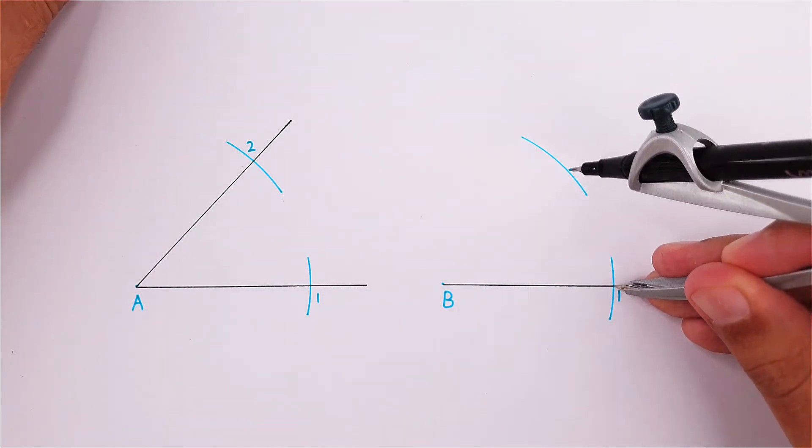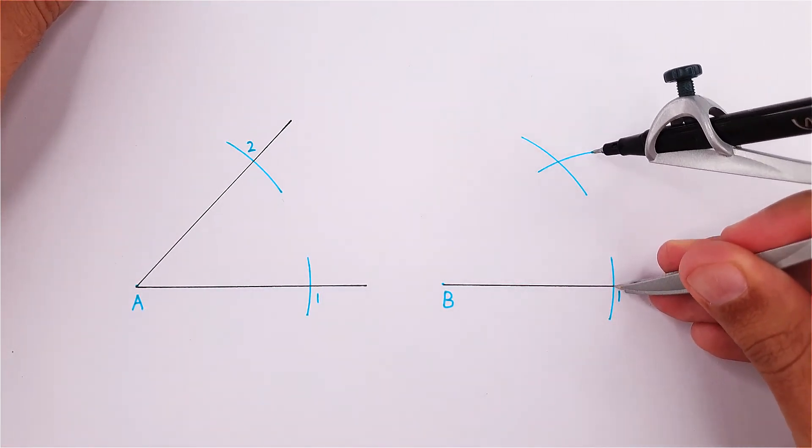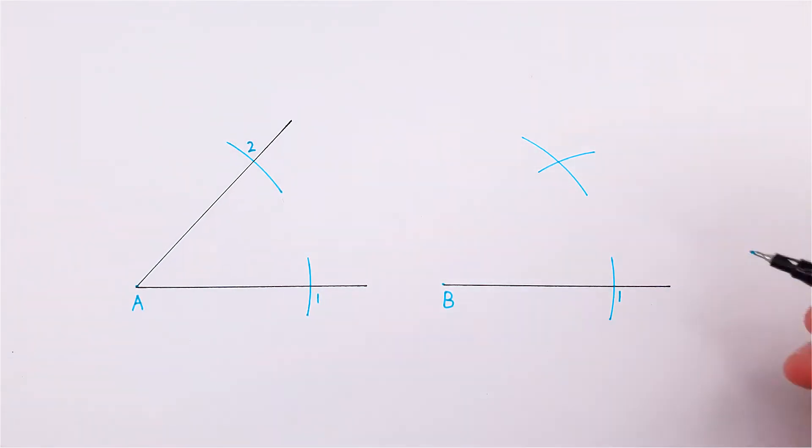Use this measurement on point 1 of angle B and draw an arc that will intersect our previous arc. This intersection can be labeled as point 2.